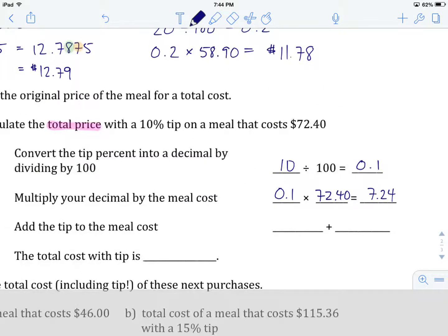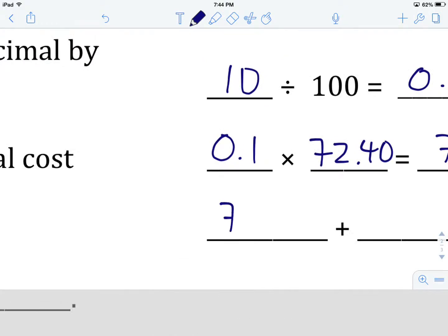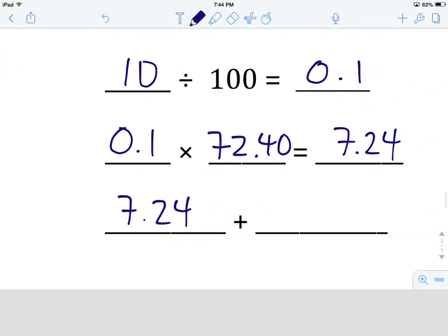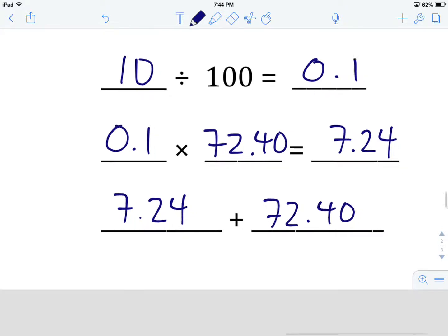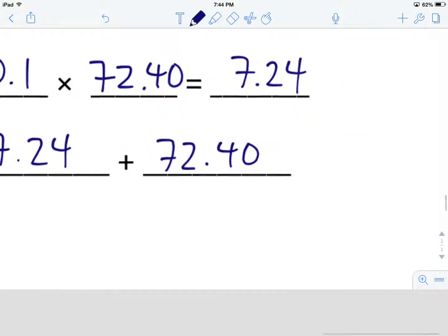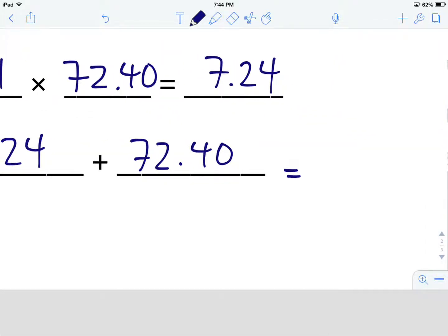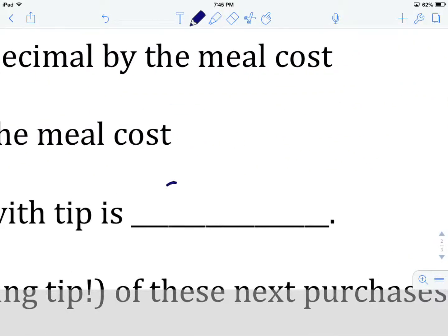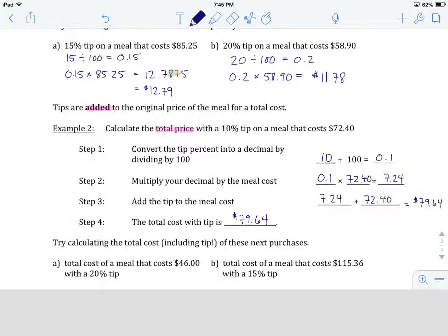Now, this is the new part. We're going to take the tip. That was $7.24. We're going to add it to the cost of the meal, which is $72.40. And when we combine those, that's when we're going to get our answer. $7.24 plus $72.40 gives us $79.64. So, our answer with tip, total price of the meal, $79.64. And that's how we do it.